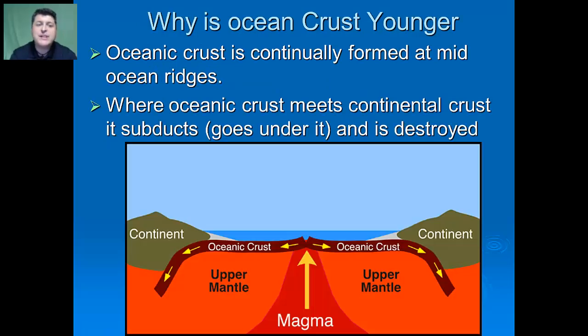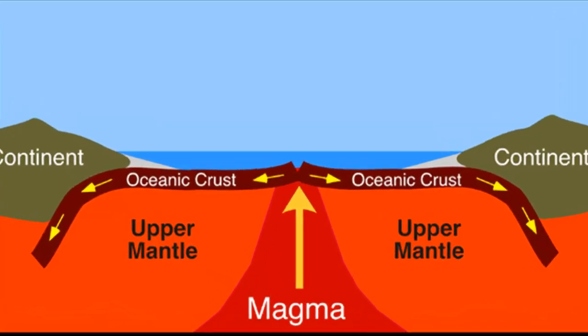Oceanic crust is continually being formed at mid-ocean ridges and constantly destroyed where oceanic crust meets continental crust. At the mid-ocean ridges, there are little fissures in the earth which allow hot magma to spew up and form new oceanic crust.